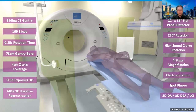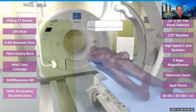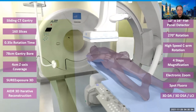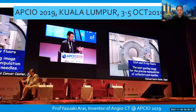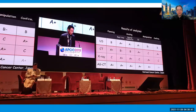The system comes with 4-cm Z-axis coverage and 0.35-second rotational scan time. In APCIO 2019, a score was given for all the capabilities including planning, guiding, real-time, spatialization, 3D manipulation capability, and confirmation of diagnosis in this system.